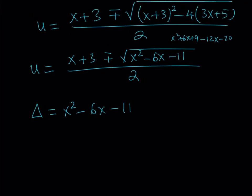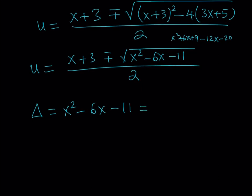So the discriminant must equal some perfect square, which we'll call w squared, where w is an integer. So we have x squared minus 6x minus 11 equals w squared. This is a Diophantine equation within a Diophantine system! But this one is manageable. I can rewrite the left side as x squared minus 6x plus 9 minus 20, which is a perfect square minus 20.